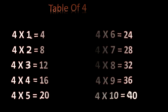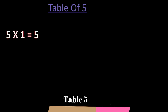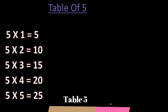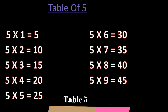Table of 5. 5 ones are 5. 5 twos are 10. 5 threes are 15. 5 fours are 20. 5 fives are 25. 5 sixes are 30. 5 sevens are 35. 5 eights are 40. 5 nines are 45. 5 tens are 50.